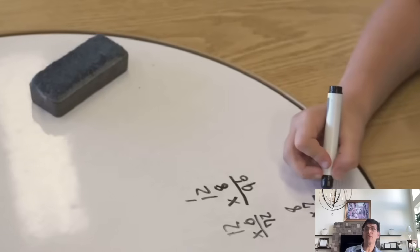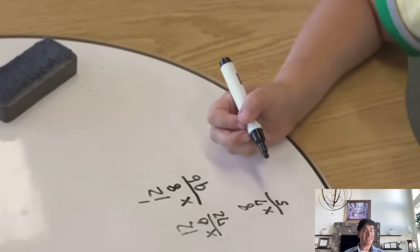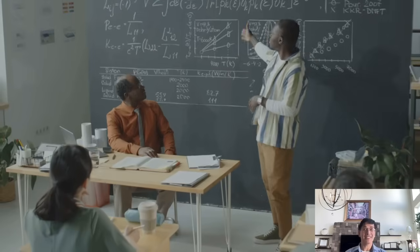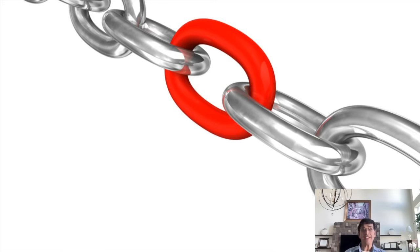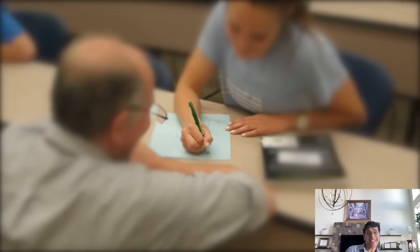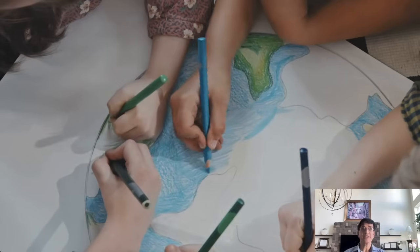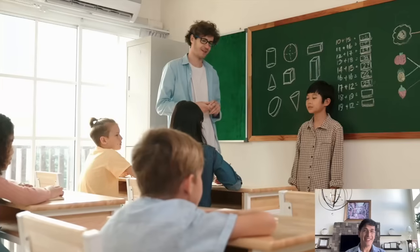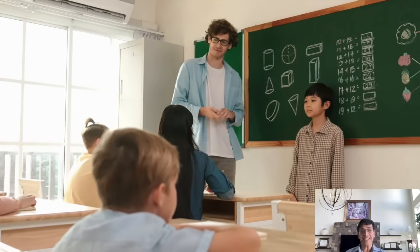That's why purposeful review isn't optional. It is the flashback that brings the story back. When we pause to review factoring before teaching functions, we are not slowing down. We are reconnecting the plot. Because students aren't confused by new concepts. They are confused by disconnected concepts.